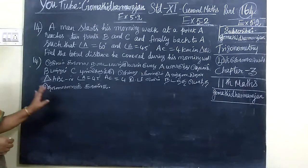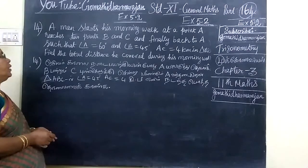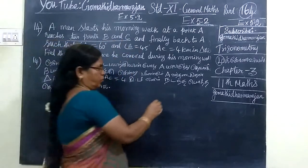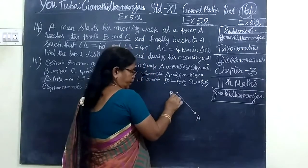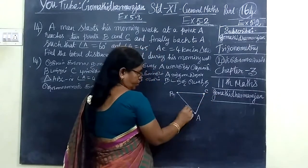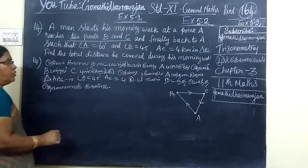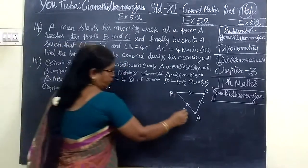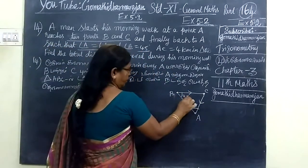So, what I want to say is, a man starts his morning walk at point A, reaches two points B and C, and finally back to A. So for the morning walk method, he begins at A, reaches B, then goes to C, then again A will come. So A to B, B to C, then C to A. So our path will work for the other way. Angle A is 60 degrees, and the angle B is 45 degrees.